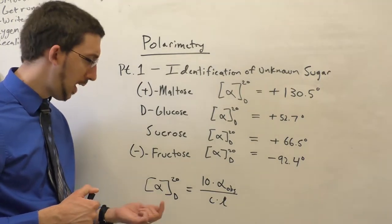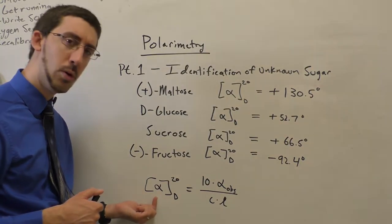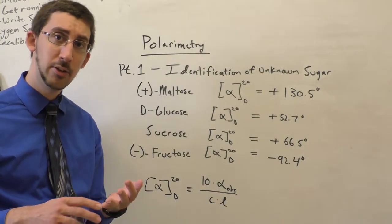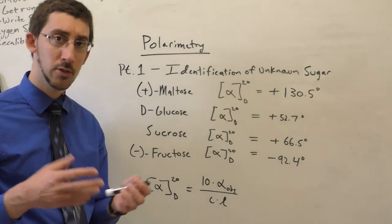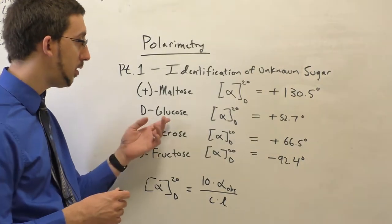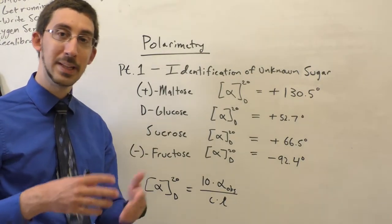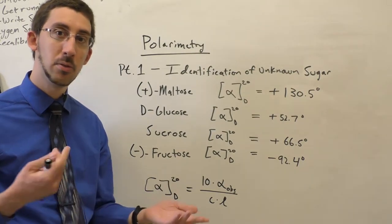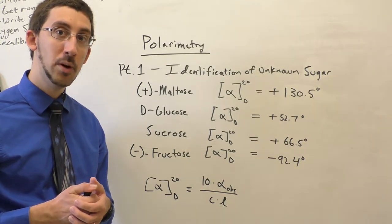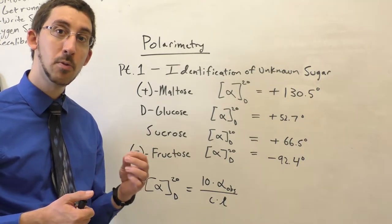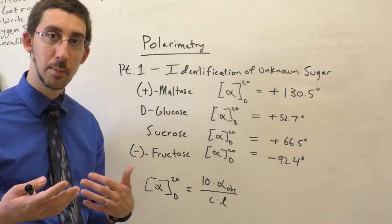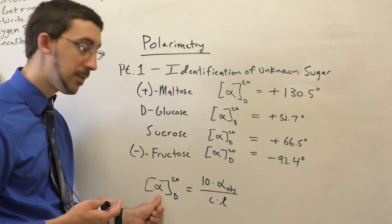Because the amount of rotation varies with concentration and path length, two separate scientists in two separate labs measuring the same identical molecule, let's say glucose, could come out with completely different rotations if they simply use different concentrations or different length polarimetry cells. And so we want to have a uniform value that can be consistent regardless of the concentration, regardless of the path length. And so that's what the specific rotation is defined as.